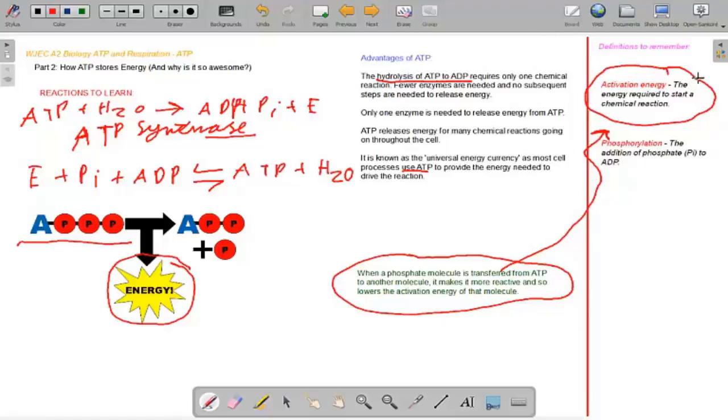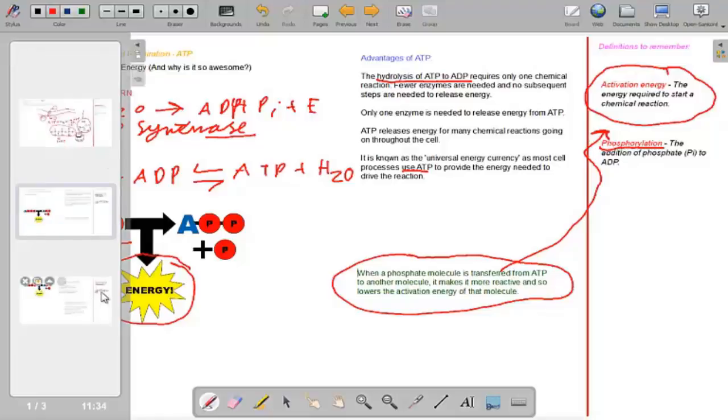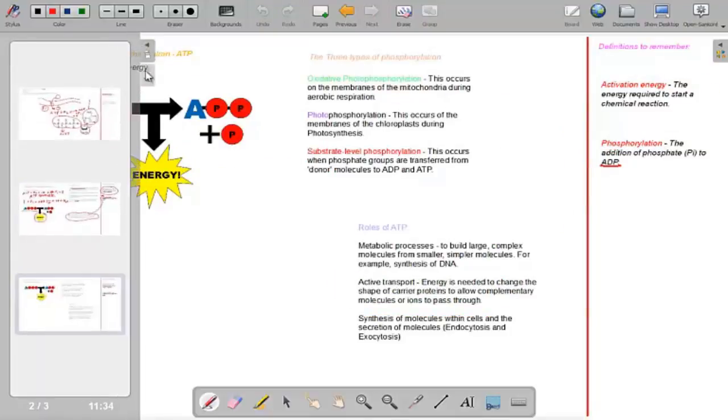Definitions now. Activation energy is the energy required to start a chemical reaction but I've mentioned that lots of times. The addition of a phosphate to ADP is phosphorylation. I can say that in the mirror a few times and hopefully you'll be able to pronounce it. It took me a little while.